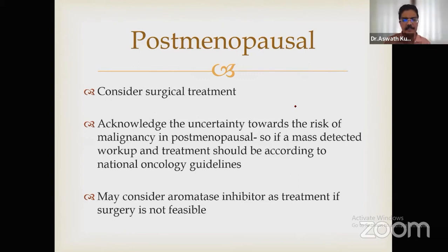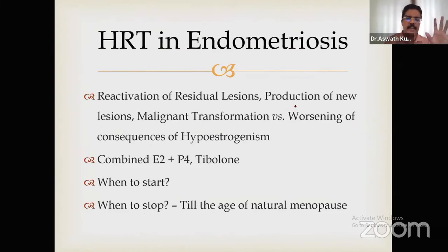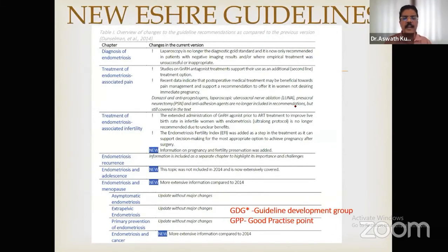In perimenopausal and postmenopausal women, consider surgical treatment. Perform a proper evaluation — do not miss a malignancy. Any mass in a postmenopausal woman should be thoroughly worked up, as there are cases of endometriosis surgery that turned out to be carcinoma. If confirmed benign, aromatase inhibitors can be considered. Regarding HRT: reactivation, malignancy risk, and other concerns are there, but HRT is recommended. A combined OC pill is better, and it is best to start immediately after surgical menopause rather than waiting a year. Continue until the age of natural menopause.